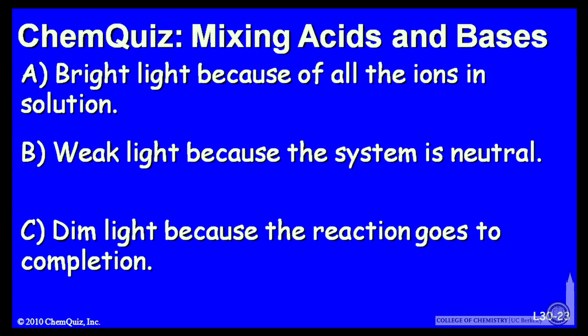Let's look at the ionic strength. A: there'll be a bright light because of all the ions in solution. B: a weak light because the system is neutral. Or C: a dim light because the reaction goes to completion. Think about all those and make another selection.